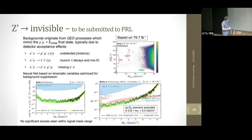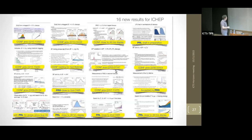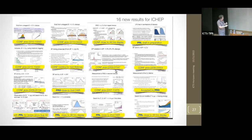We had 16 new results for ICHEP spanning semileptonic decays, CP violation, quarkonium, tau physics, dark sector, and one more charm lifetime measurement — so we're very active.